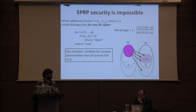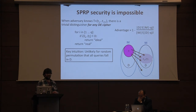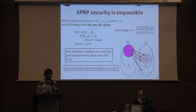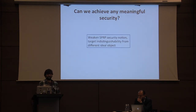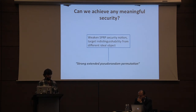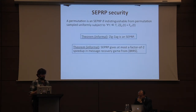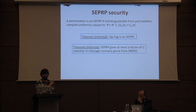The key intuition is that for a random permutation it's very unlikely for all images of queried points to fall in D, but for a domain-extended cipher this happens with probability essentially one due to the functionality requirement. The probability of being fooled is a quotient of factorials — a fast-growing function, especially when M is much larger than D. The question becomes whether we can prove any meaningful security, so we weaken the security goal and target indistinguishability from a slightly different ideal object, which we call strong extended pseudorandom permutation security (SEPRP).